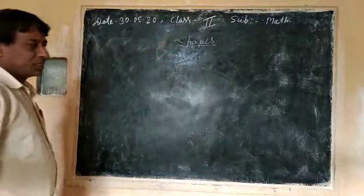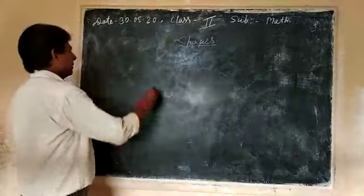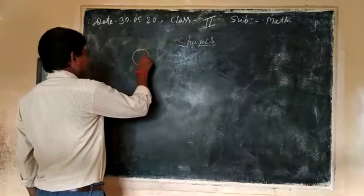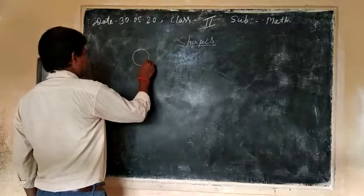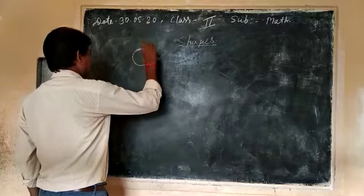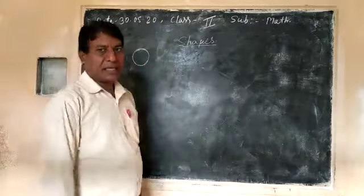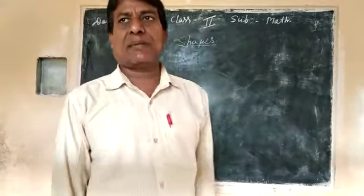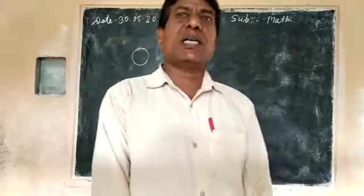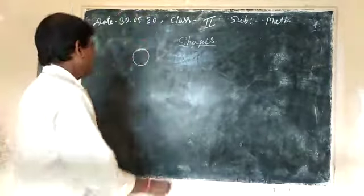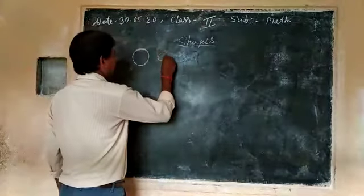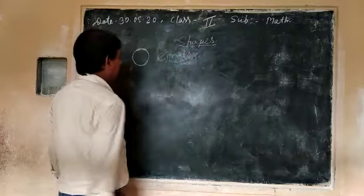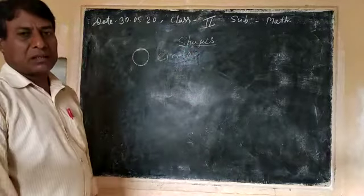The first thing we have seen in the chart is number one. What is the name? This shape, what is the name? Circle. We will use the circle C-I-R-C-L-E. What is the name? Circle.